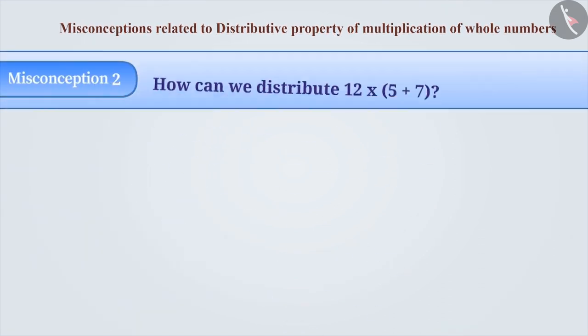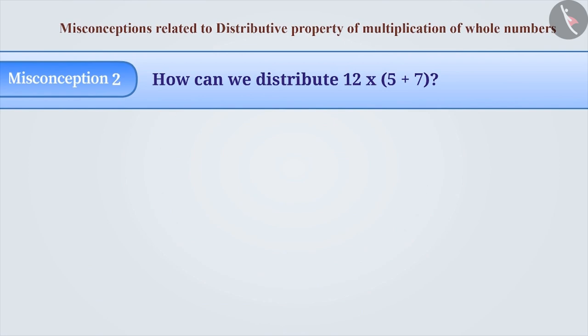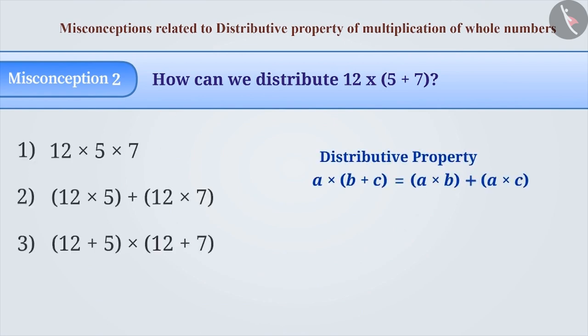Misconception 2: How can we distribute 12 × (5 + 7)? While using distributive property, we need to multiply the numbers inside the brackets with the number outside the brackets. With this understanding, option 2 is chosen, which is the correct answer.